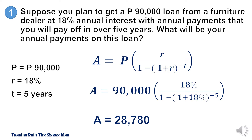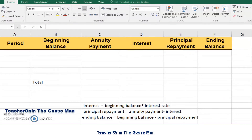After we get our amortization, we will now construct the amortization table or amortization schedule. Whenever we say amortization schedule, it is a complete table of periodic loan payments showing the amount of principal and the amount of interest that comprise each payment until the loan is paid off at the end of its term.